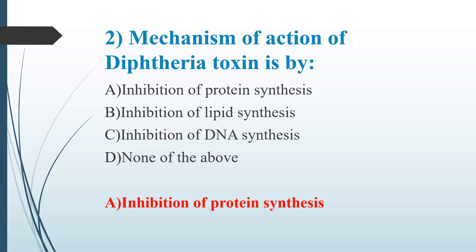Other important toxins: Tetanospasmin's mechanism of action is to inhibit neurotransmitter release from CNS neurons. Botulinum toxin blocks the release of acetylcholine, which is a principal neurotransmitter. Cholera toxin acts on animal cells by stimulating the enzyme adenylate cyclase, which catalyzes the production of cyclic AMP from ATP.